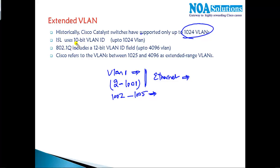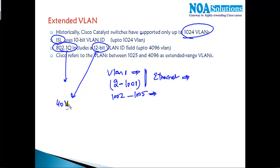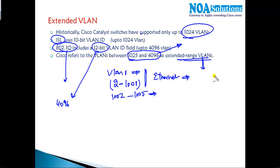The ISL VLAN ID is 10 bits. If you're using 802.1Q trunking, it has a 12-bit VLAN ID which supports up to 4096 VLANs. This means we can use VLANs above 1025, and this range above 1025 is called the extended VLAN range. This extended VLAN range is supported on specific platforms and allows you to add more VLANs to your network.